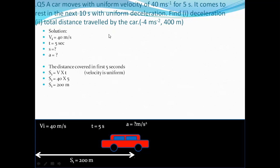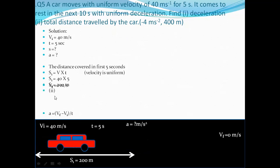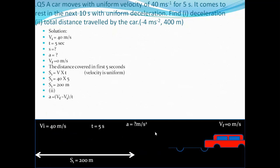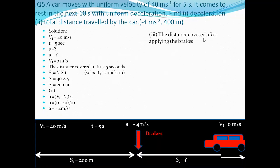For the deceleration phase: using a = (Vf - VI)/t, where Vf = 0, VI = 40, and t = 10 seconds. Acceleration = (0 - 40)/10 = -4 m/s². The negative value confirms the car is slowing down. Now we calculate S2, the distance after brakes are applied.